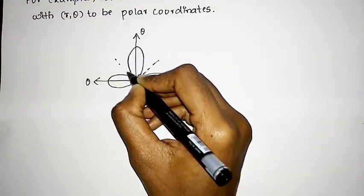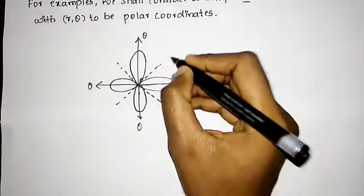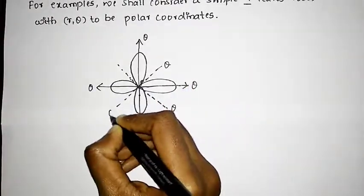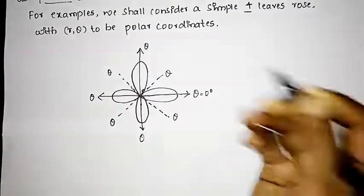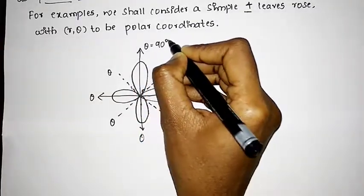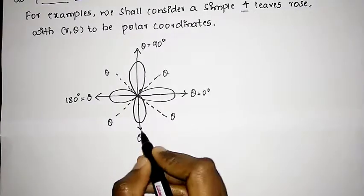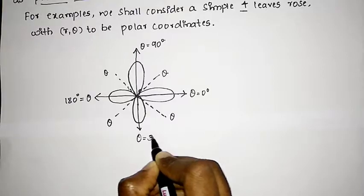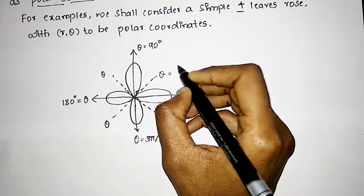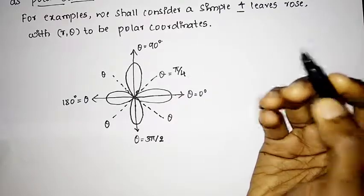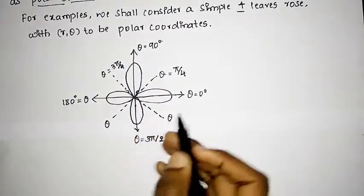Now we shall draw some axes to specify the angle from the center of the point. So this is theta, and this is also theta. As you know, the first angle will be 0 degrees. Similarly, this is 90 degrees, this is 180 degrees, and then 360 degrees. In radians, that is 3pi/2. If 0 degrees and 90 degrees, the half will be 45 degrees, which is pi/4. Similarly, this will be 3pi/4.